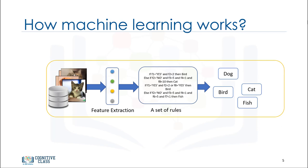Assume that you have a dataset of images of animals such as cats and dogs, and you want to have software or an application that can recognize and differentiate them. The first thing that you have to do here is interpret the images as a set of feature sets.